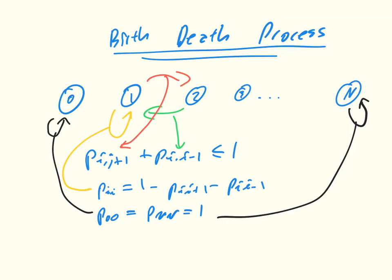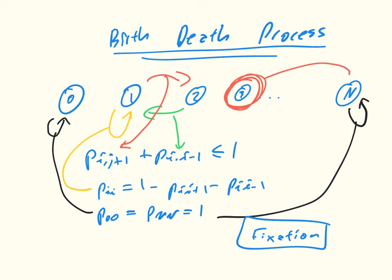What we're actually interested in is what's called fixation. The idea is: if I start in a given state, if I start here for example, what is the probability with which I'll end up here? Because remember, if we're counting the number of individuals in our population — if I start with three individuals, what's the probability that I'll end up having nothing but this particular individual? If I end up at 0, that means the other individual is here. So this is the idea we're interested in: when does this particular individual become fixed? What is the fixation probability X_i?